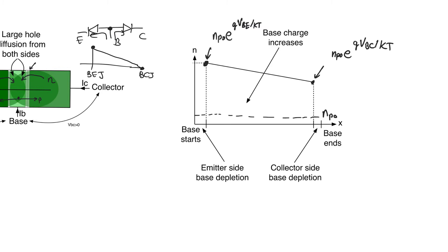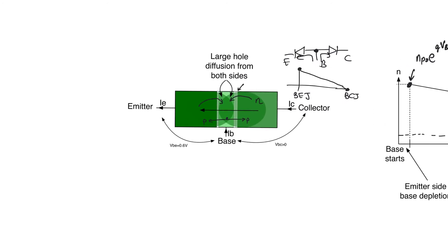This has caused the Base to be rich in electrons — it has caused the Base to basically reverse its type. Now it's not P-type; it's N-type instead, because it has a lot more electrons than usual. So what kind of material do we observe between the Collector and the Emitter? Between the Collector and the Emitter, we see N-type and then N-type — a continuous range of N-type: N-type in the Emitter, N-type in the Base, and N-type in the Collector. It's all N-type silicon.